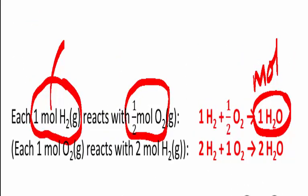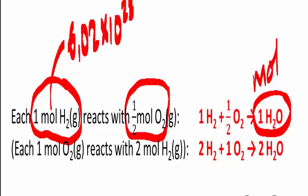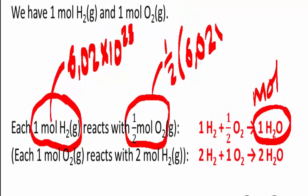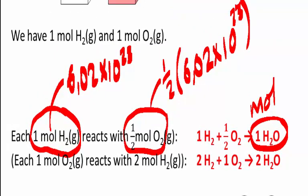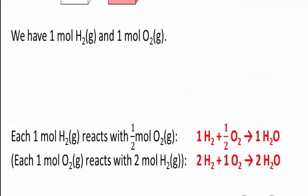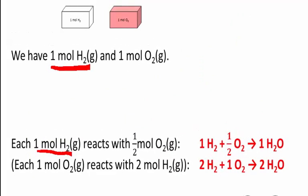Remember, a mole is 6.02 times 10 to the power of 23. So one mole of hydrogen is 6.02 × 10²³ hydrogen molecules, whereas half of that is 3.01 × 10²³, which obviously you do get. So we know that one mole of hydrogen, which is what we have, needs half a mole of oxygen — but we have a whole mole, not just half a mole.